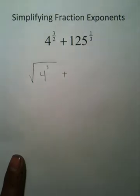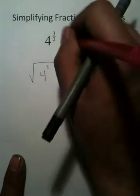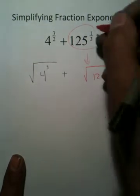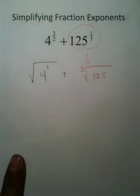Over here, this represents 125, a power of 1 inside with an index of 3 on the outside.